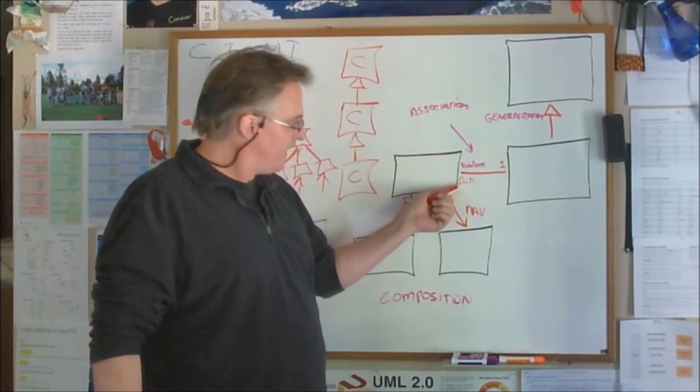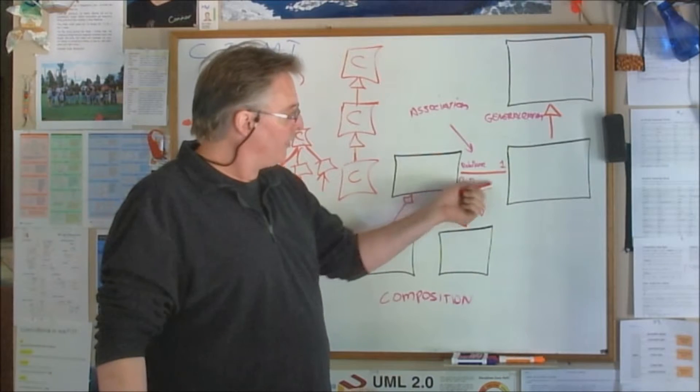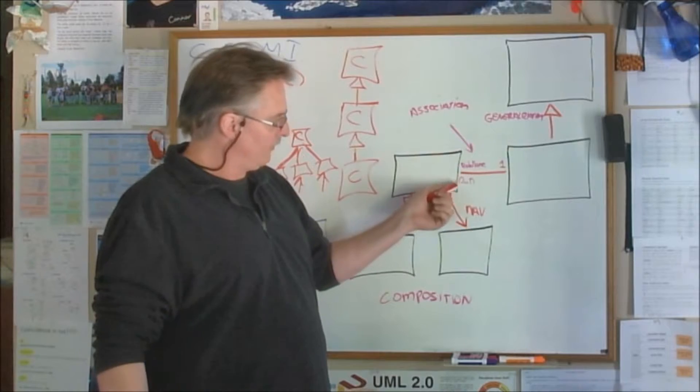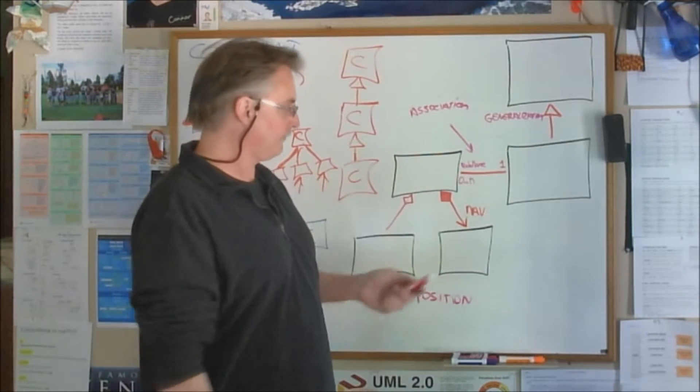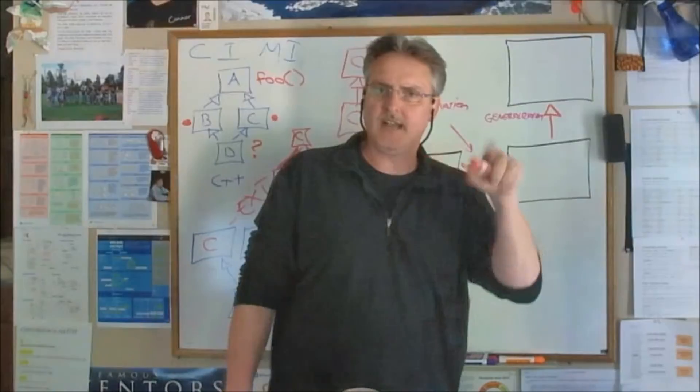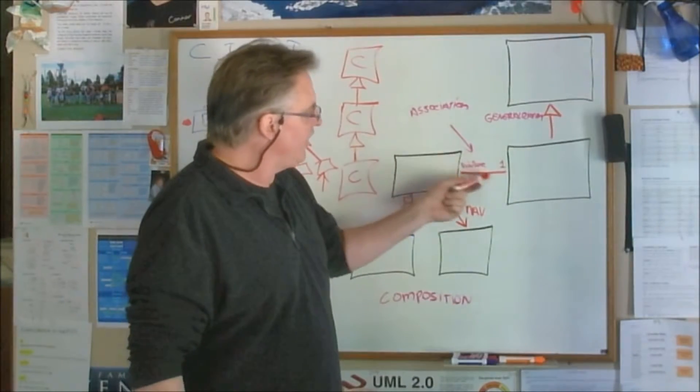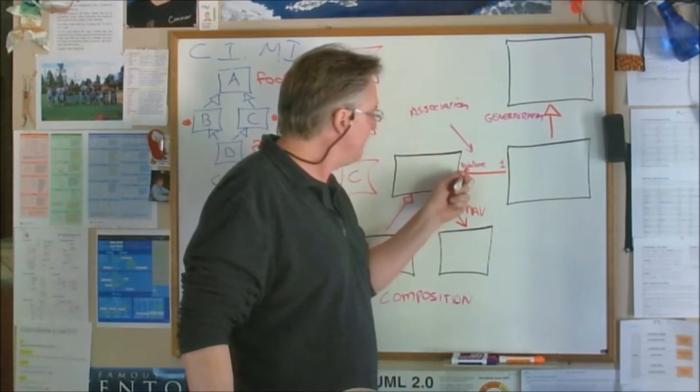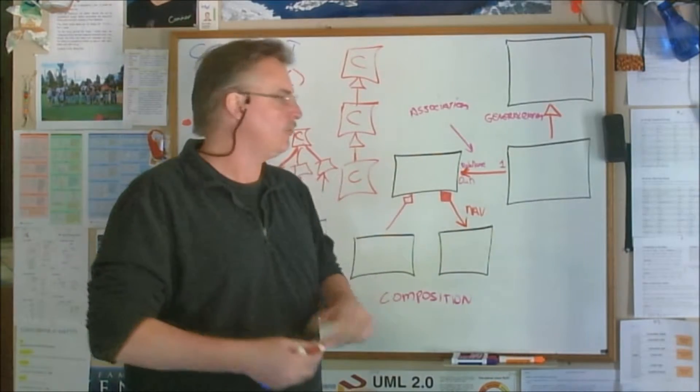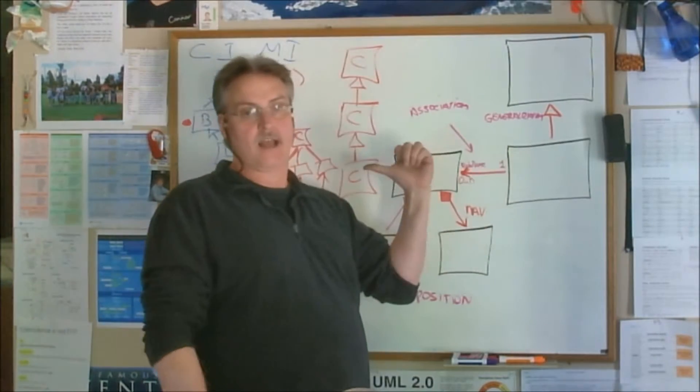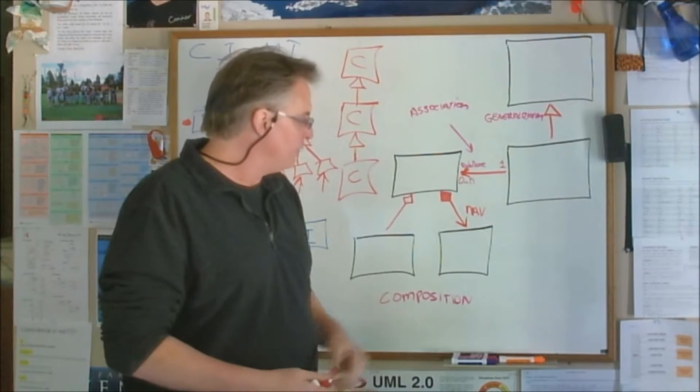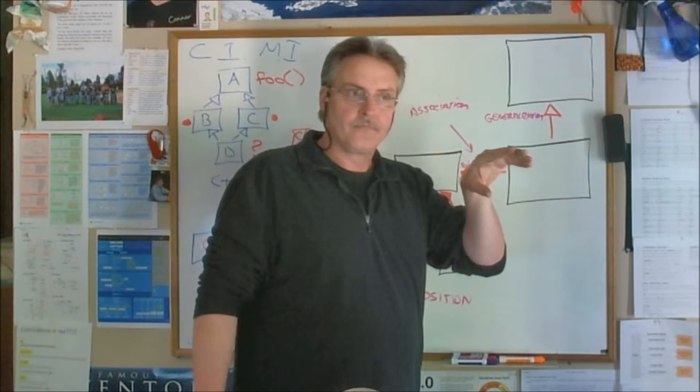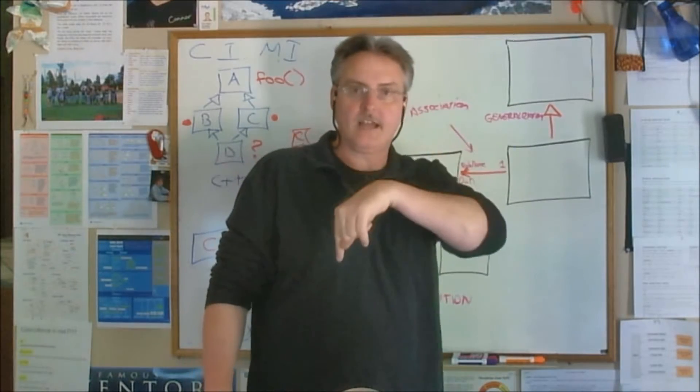The straight line is an association, which means there is a link between the two classes. Here's a one to many, this is called multiplicity. How many of this and how many of that? One to zero or more or n or asterisk. Sometimes you'll see an asterisk. That's called an association relationship. If that's got an arrow on it like that, that means navigability. You can navigate from this to that. Meaning inside of here, you'll see a way to navigate right to that. Boom.